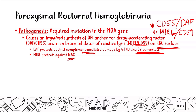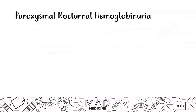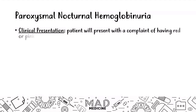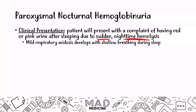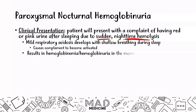You can think of this as sort of an autoimmune issue happening in your blood. When it comes to clinical presentation, the patient will present with the complaint of having red or pink urine right after sleep due to sudden nighttime hemolysis. During nighttime, you're going to have mild respiratory acidosis develop with shallow breathing during sleep, and this can cause complement to be activated, resulting in hemoglobinuria and hemoglobinemia in the morning. Patients can also have hemosiderinuria days after hemolysis.